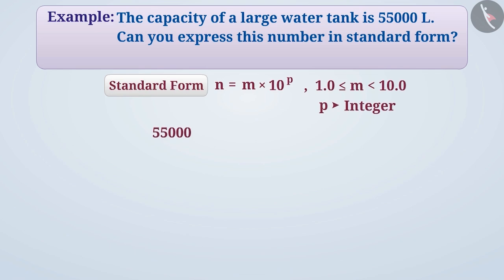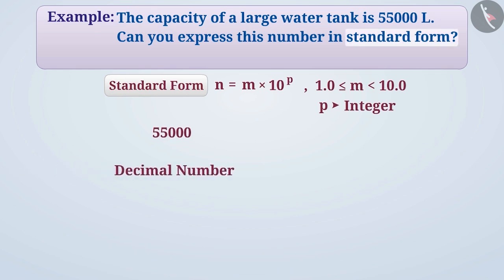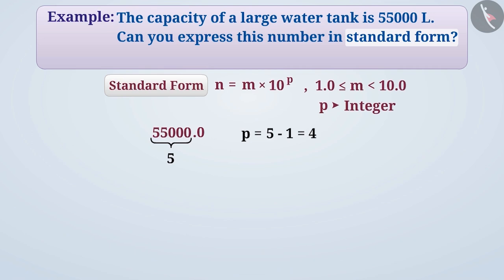To express this number in its standard form, first we will convert it into a decimal number. We can see that there are a total of 5 digits to the left of the decimal point. By subtracting 1 from 5, we get the value of p as 4.